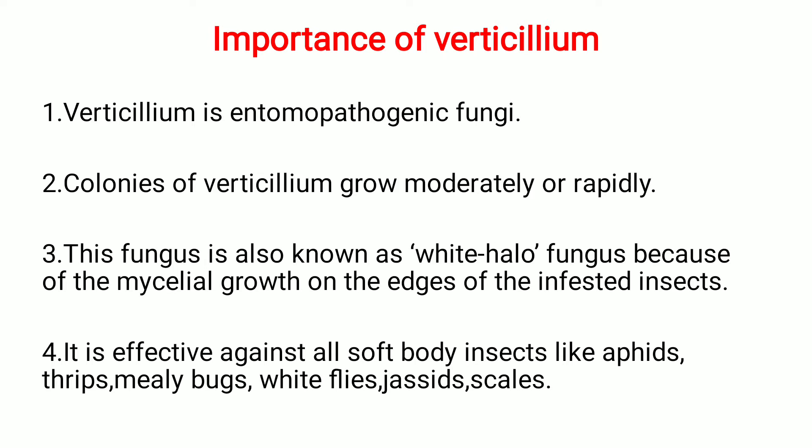Once the Verticillium fungus attacks an insect, whitish mycelial growth occurs on the edge of the infected insect, giving it the appearance of a white halo fungus. It is effective against all soft-bodied insects like aphids, thrips, mealybugs, whitefly, jassids, and scale insects — that is, a number of sucking-type insects are controlled with the help of Verticillium.